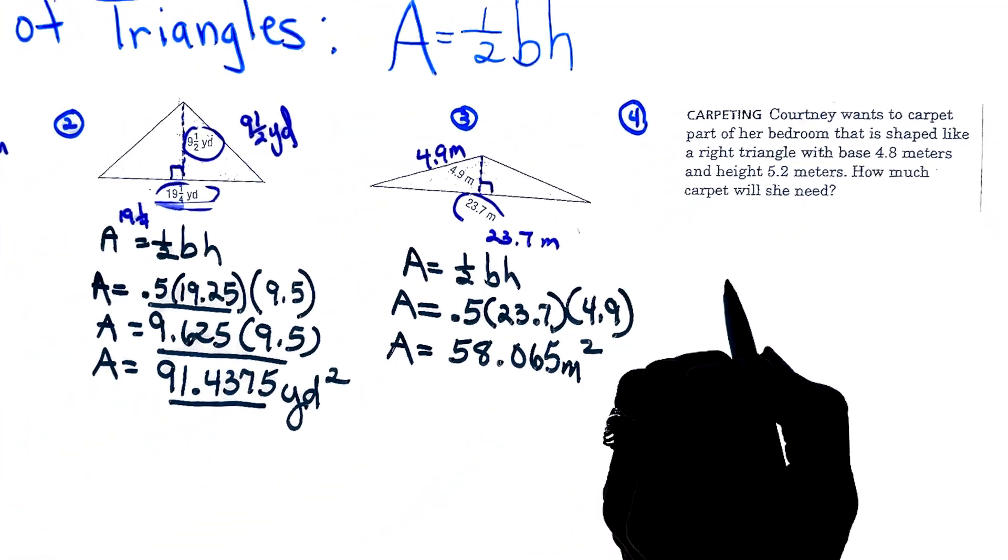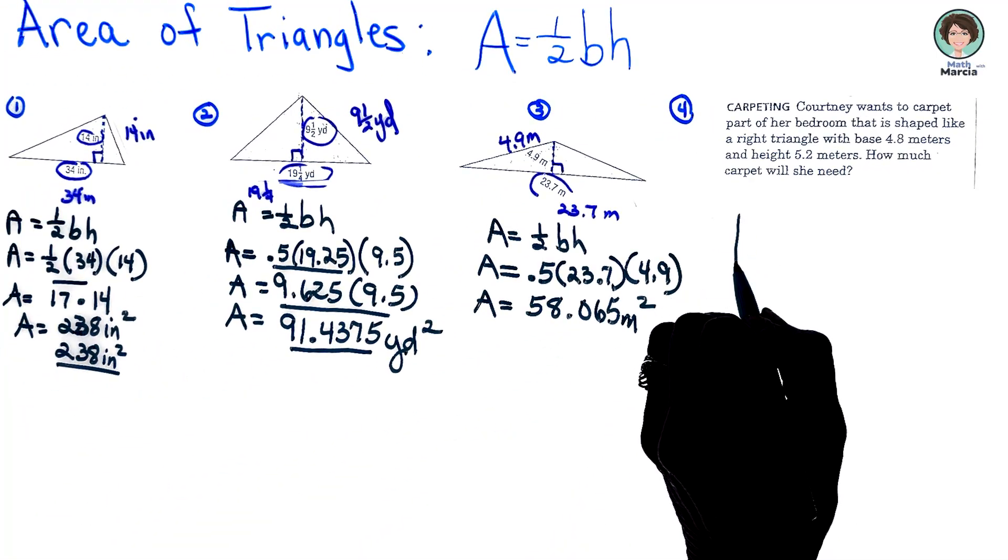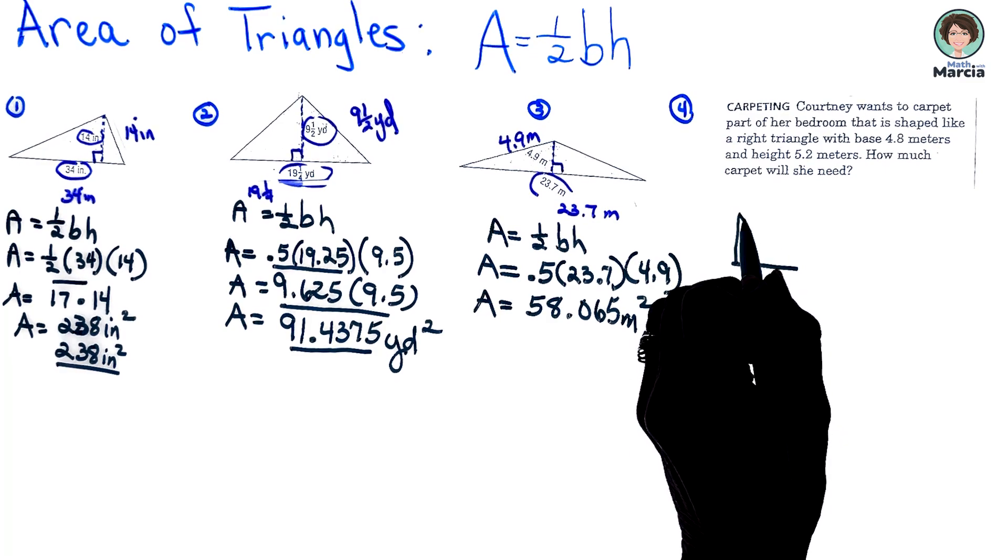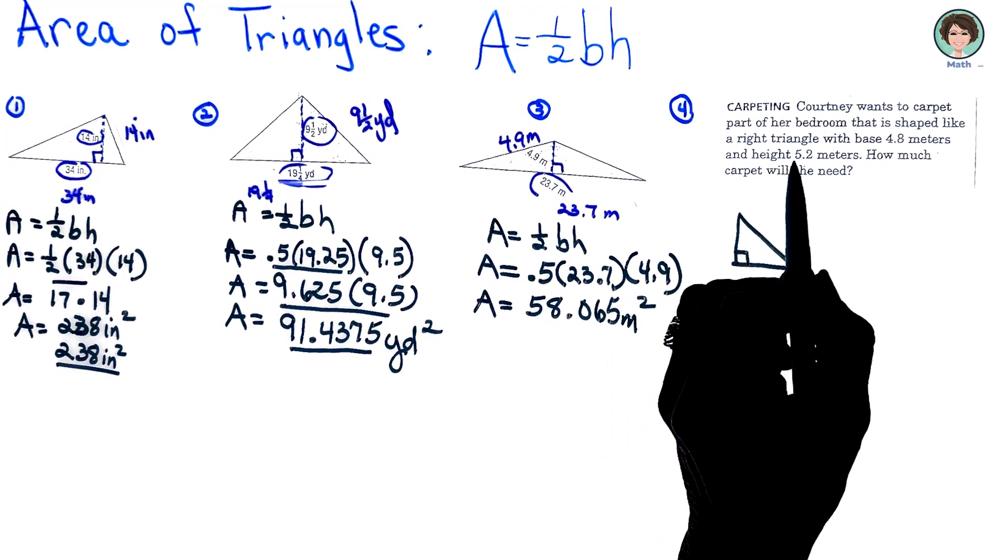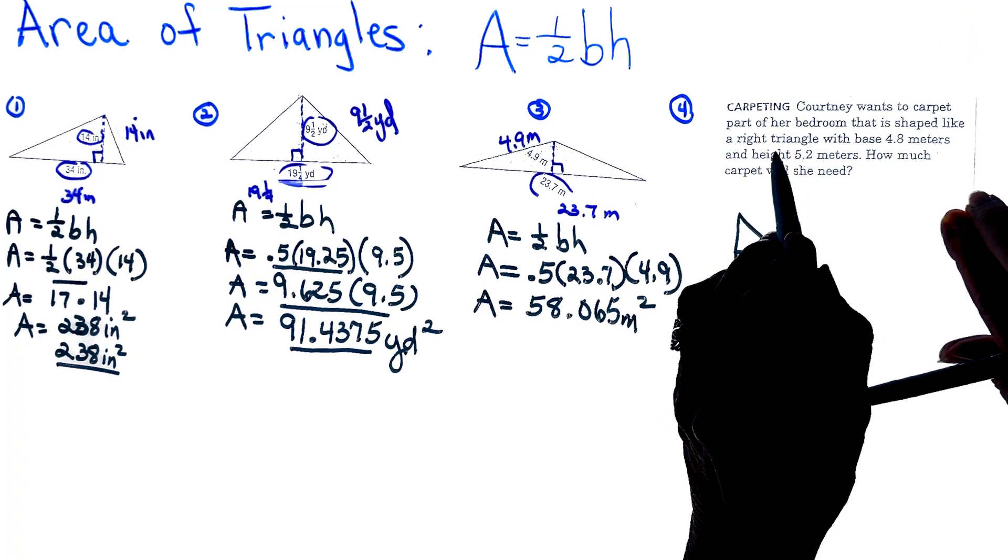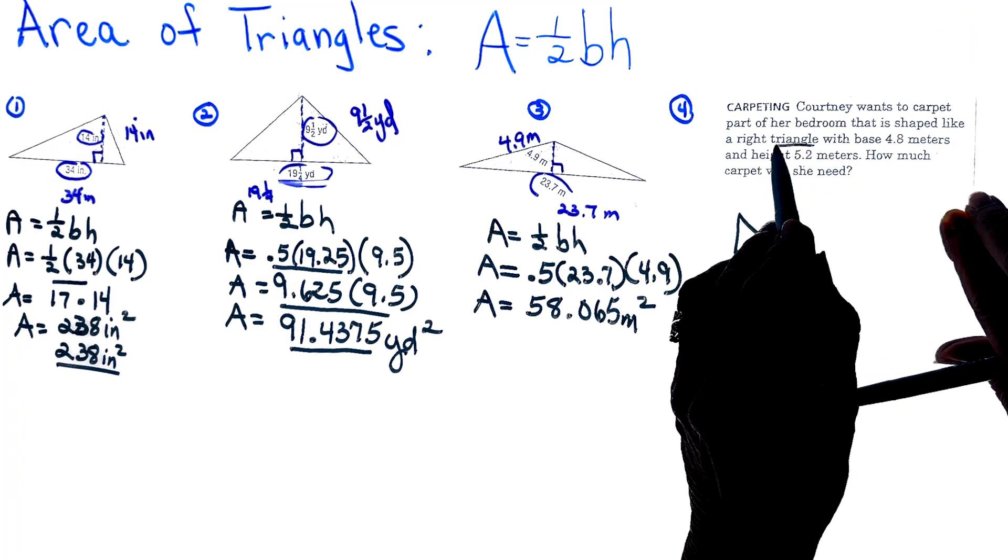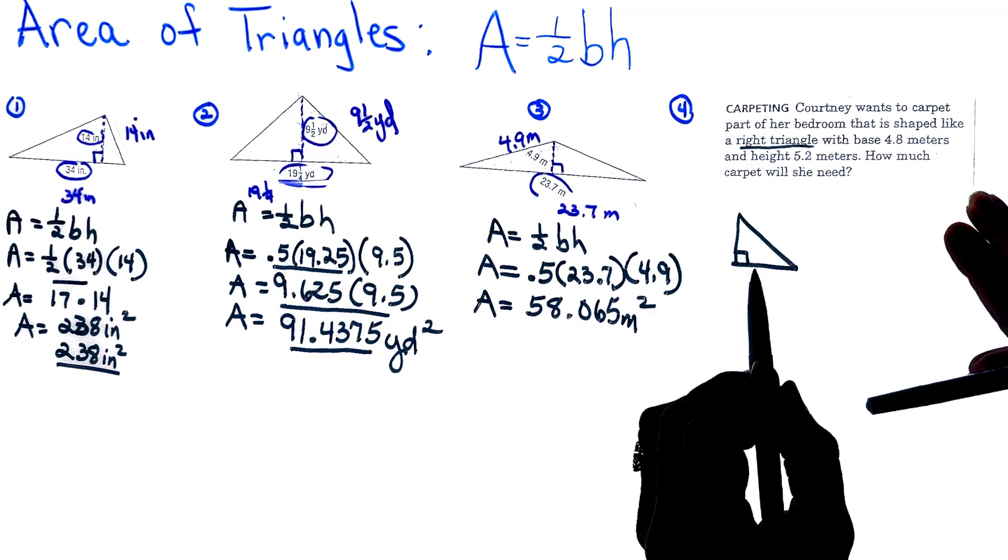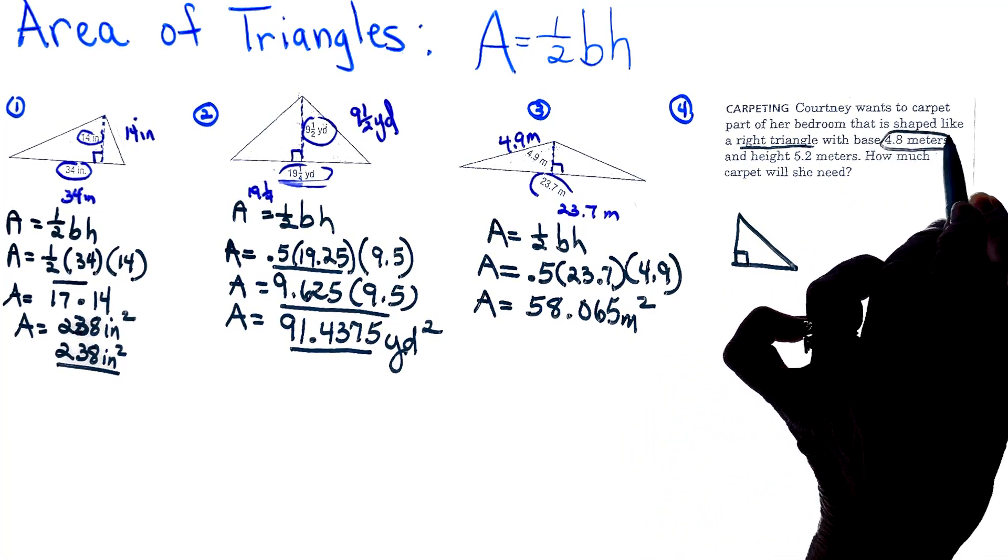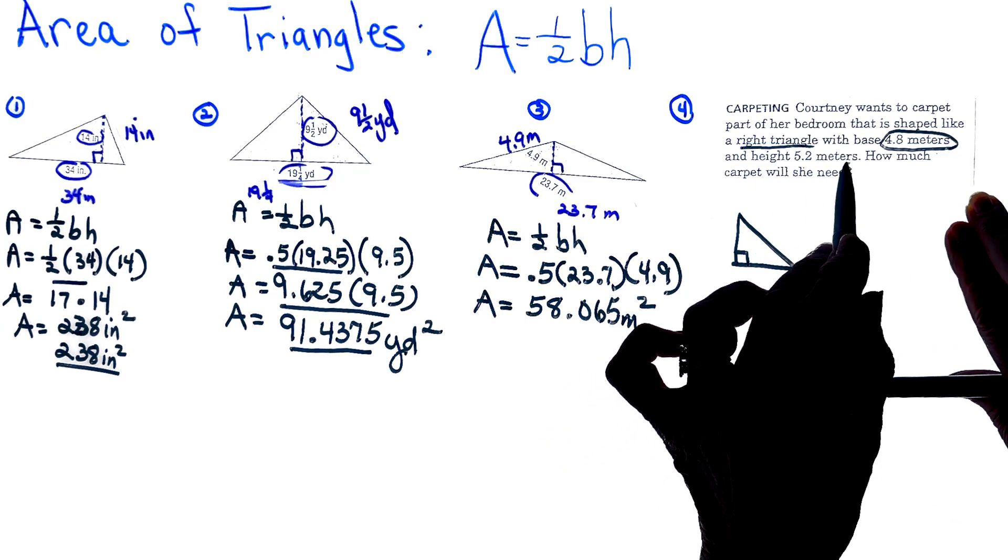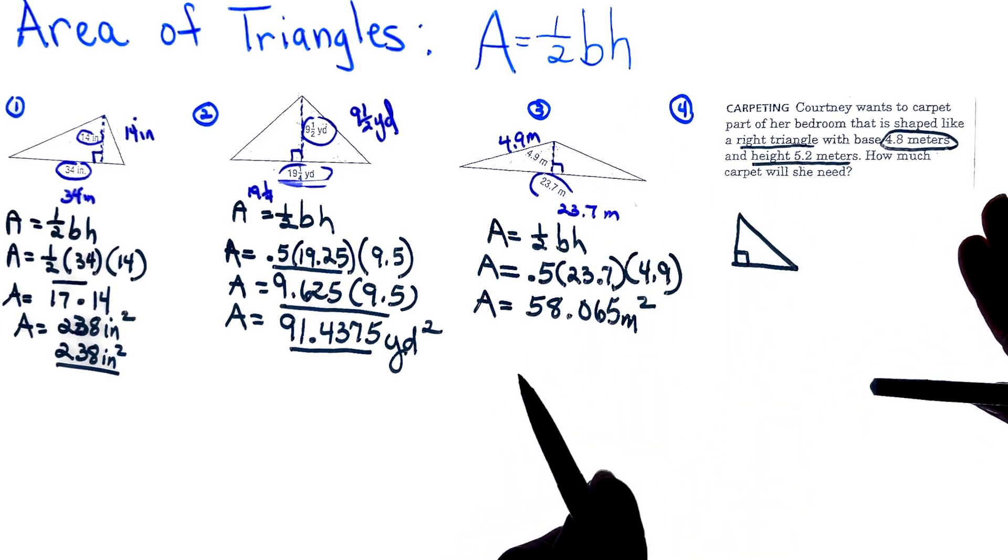I always love to draw a picture before I actually start the problem. Going back to the text, it says that her part of her room is actually shaped like a right triangle. So that's why I drew that. Let's mark the text: the base is 4.8 and our height is 5.2 meters.